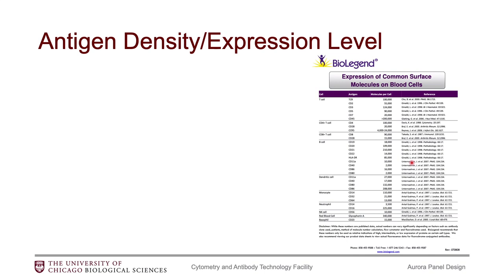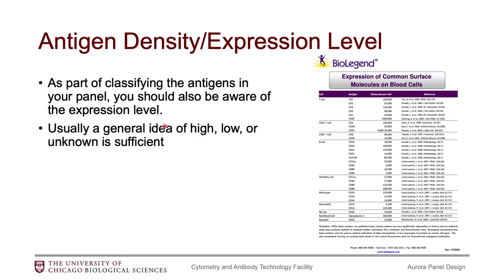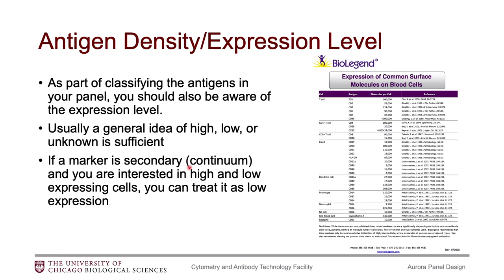We also need to think about the antigen density or expression level. I have a table that describes the actual number of molecules per cell, which is very interesting, but you definitely do not need to know this level of detail. What you really just need to know is a general idea of whether it is high expressed, low expressed, or unknown. Keep in mind, if you have a secondary marker in terms of panel design, this will come in handy when we're trying to decide if we need to pair a bright or dim fluorophore. I would categorize your secondary markers as low expressors because even though they have both low and high expression, we need to resolve the low expression, and that will factor into choosing your fluorophore.